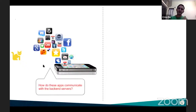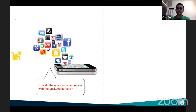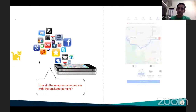Have you ever wondered — you're using these apps day-to-day, sleeping with phone, eating with phone — have you ever wondered how these apps communicate with the backend servers? You open Uber, Swiggy, any app — it has to talk to some server. How does that whole communication happen? Based on what you did yesterday with HTTP, can you actually make a guess?